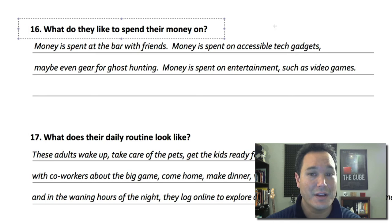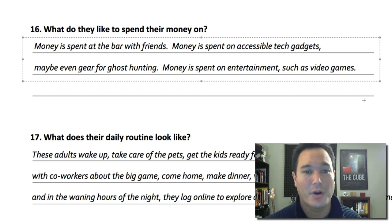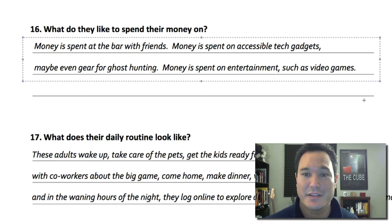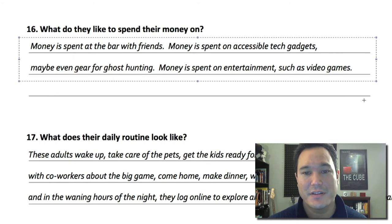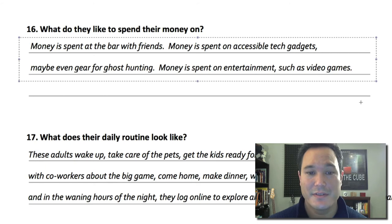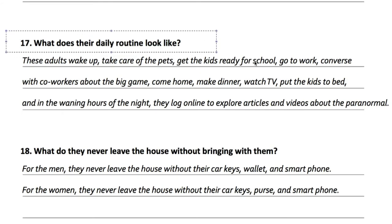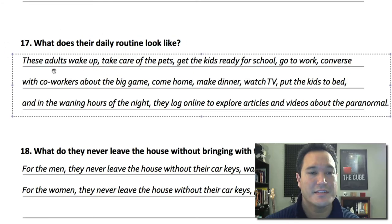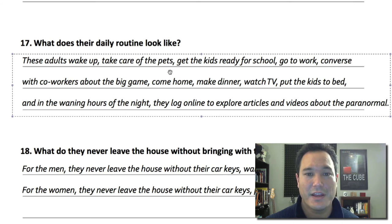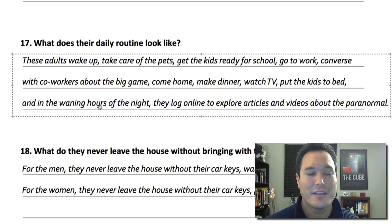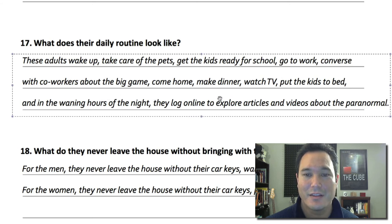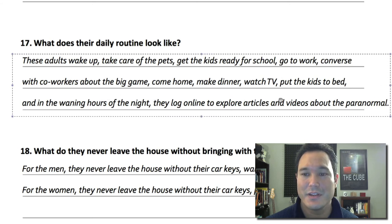Number sixteen: what do they like to spend their money on? Money is spent at bars with friends, on accessible tech gadgets, maybe gear for ghost hunting, and on entertainment such as video games. Number seventeen: what does their daily routine look like? These adults wake up, take care of their pets, get the kids ready for school, go to work, converse with coworkers about the big game, come home, make dinner, watch TV, put the kids to bed, and in the waning hours of the night, they log online to explore articles and videos about the paranormal.